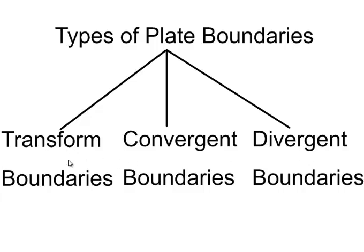Transform boundaries involve shifting side to side, convergent boundaries involve coming together, and divergent boundaries involve dividing or spreading apart. So as we just said, transform boundaries are when two plates are sliding by one another.